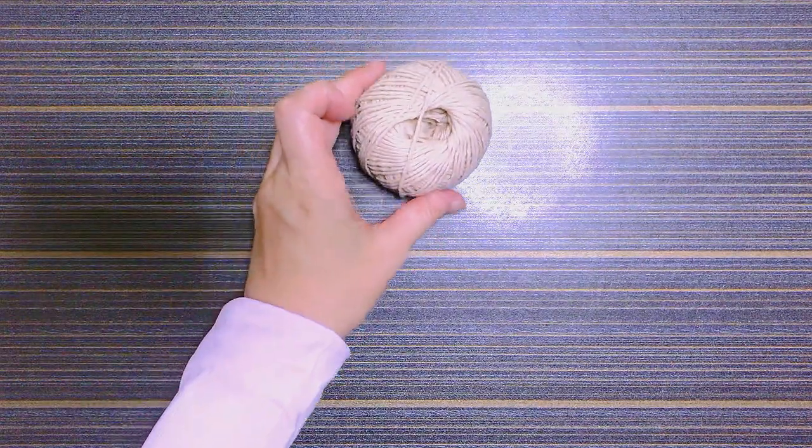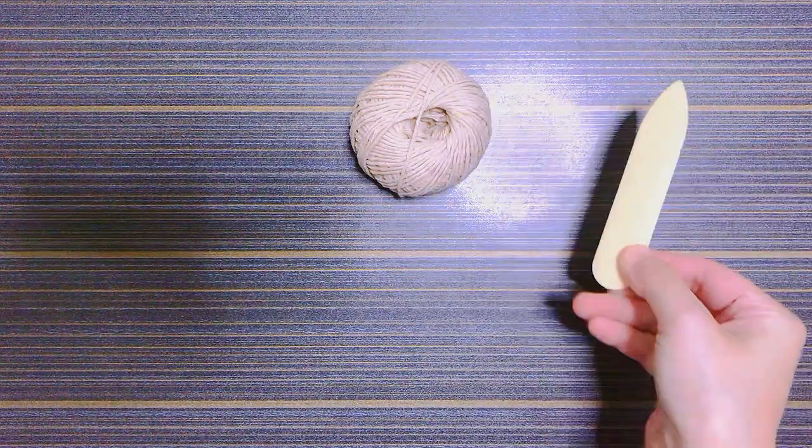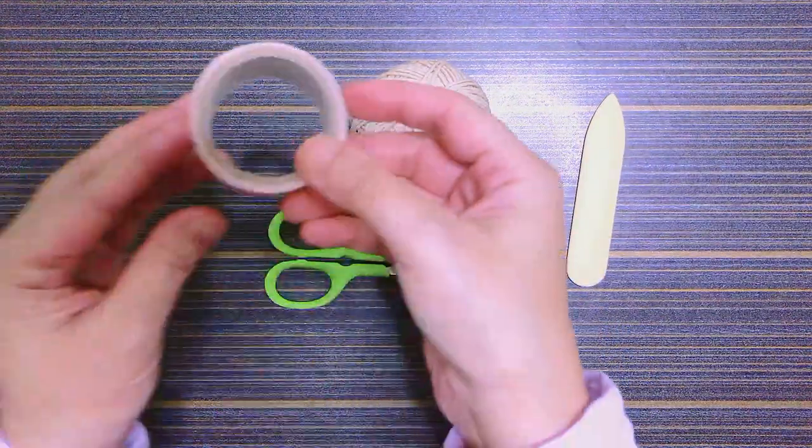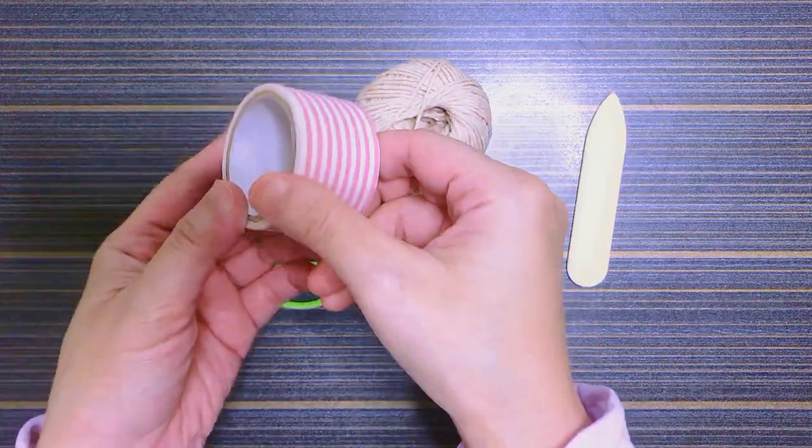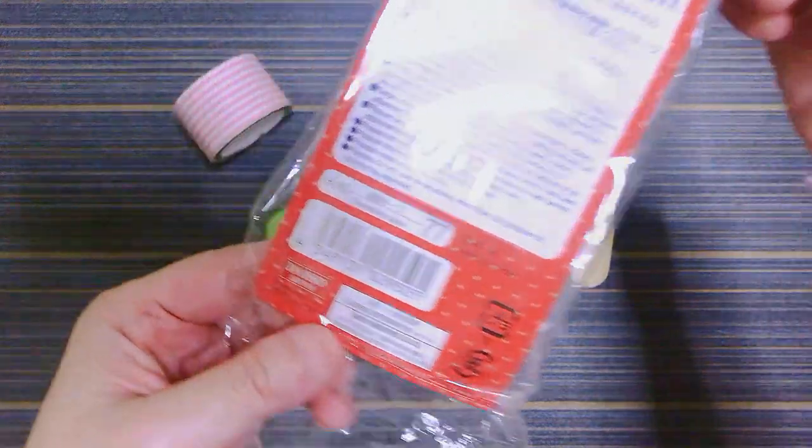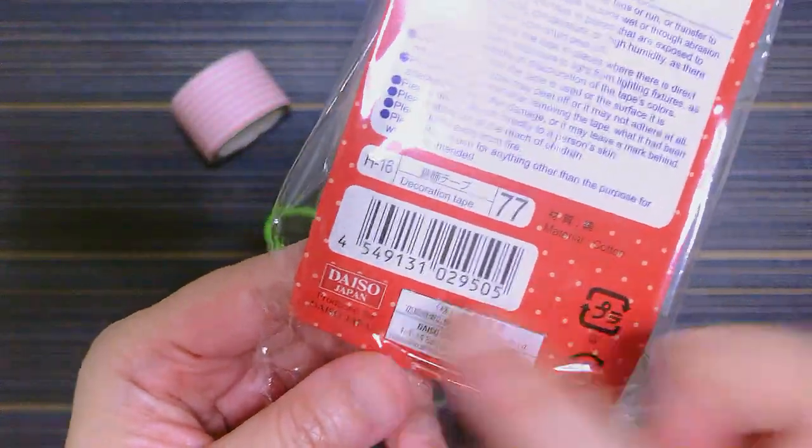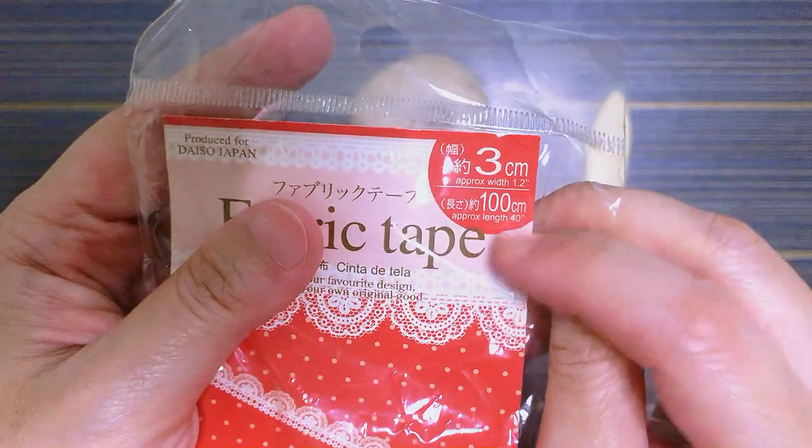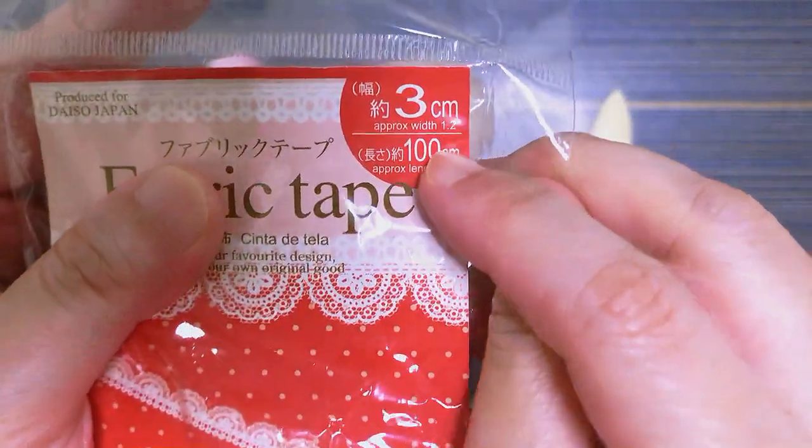So what I need for my DIY are wool twine, a bone folder, scissors, and a fabric tape. This is the widest one I have. It's an old purchase from Daiso, measuring 3cm wide, about 1.2 inches.